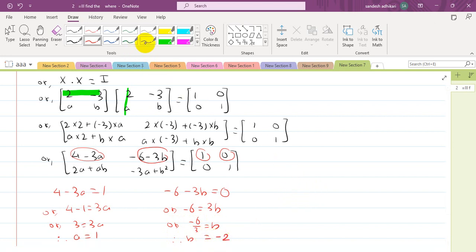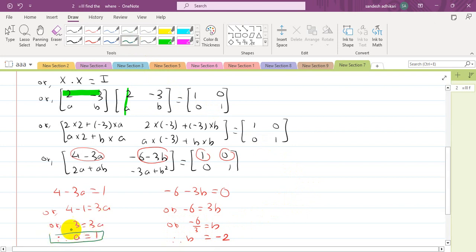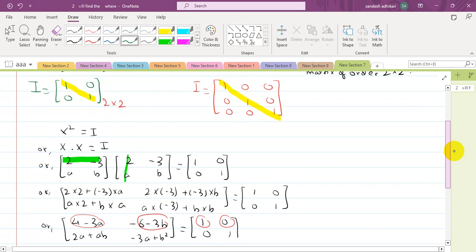So our answer is a = 1 and b = -2. This is how we solve matrix multiplication related questions.